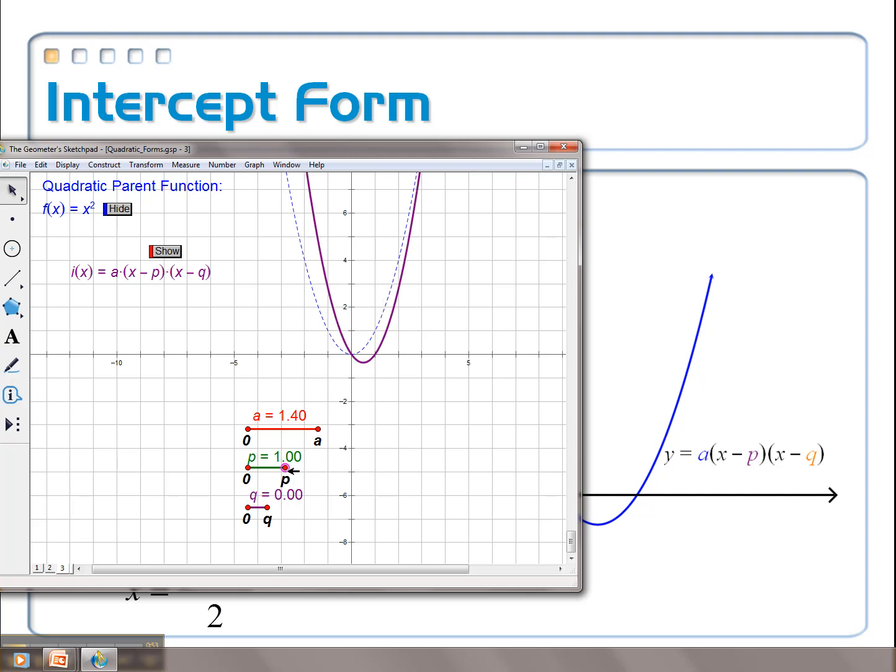So now let's change p. Let's move p to the right. Now, look at this. I've got p at, let's say, 4. If I look at my parabola at 4, that's where the x-intercept is.